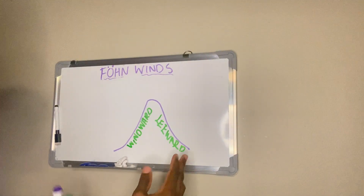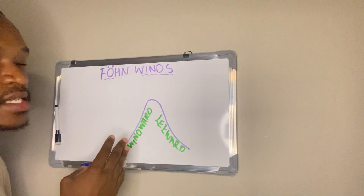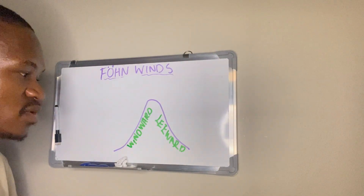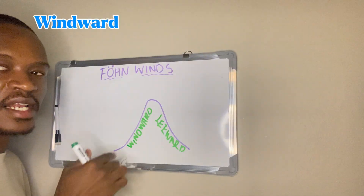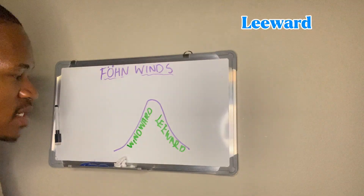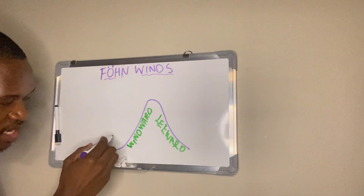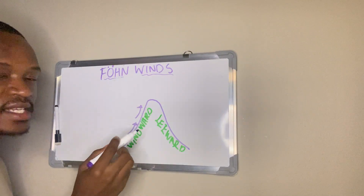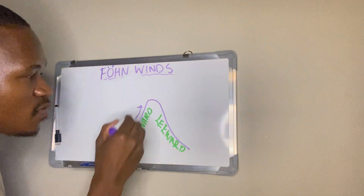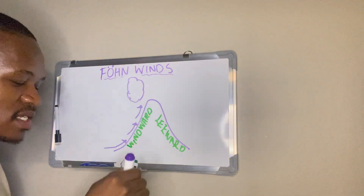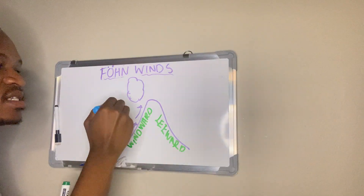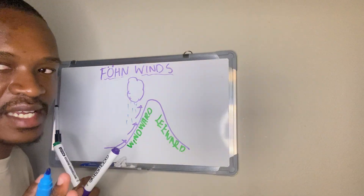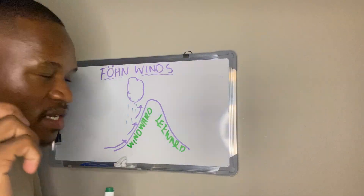Local topographies such as mountains can result in small-scale winds such as our Fohn winds. On the windward side, we have moist air coming from the ocean. This moist air rises against the mountain — it rises, cools, and condenses to form clouds on the windward side. Clouds bring about precipitation or rainfall. This is what we called orographic or relief rainfall in grade 10.